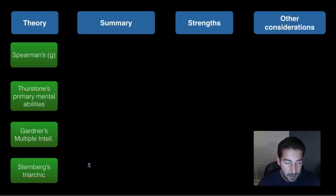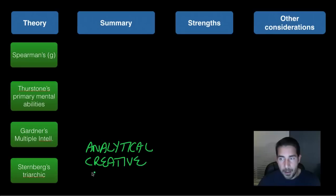And then Sternberg's triarchic is three. Triarch, three. So he has three, this was analytical, creative, and practical. He did his three.